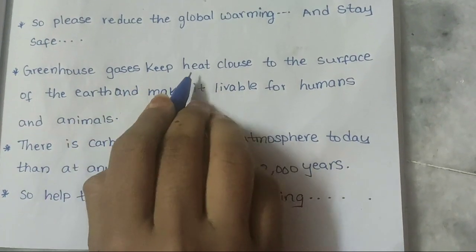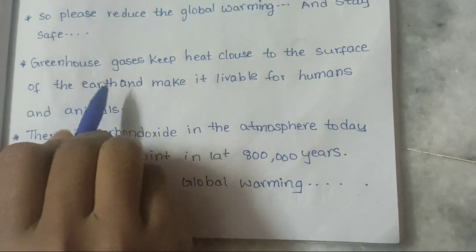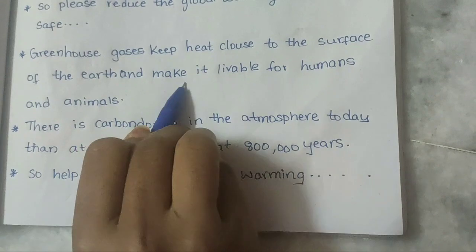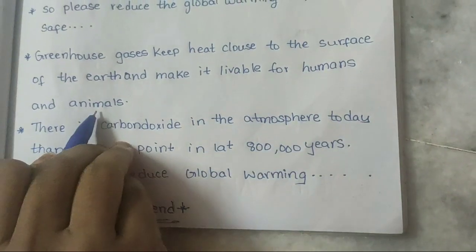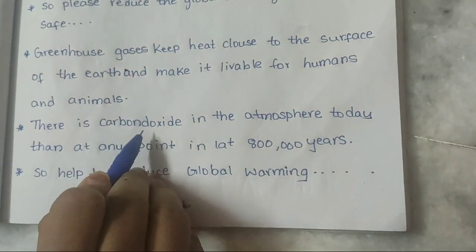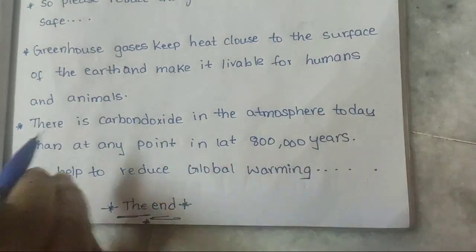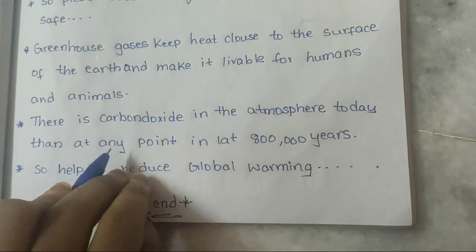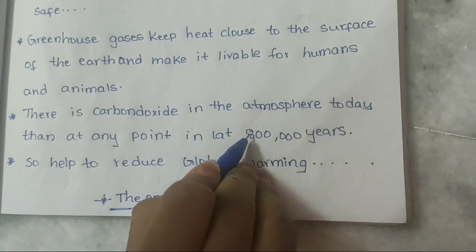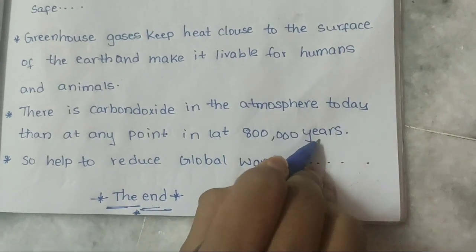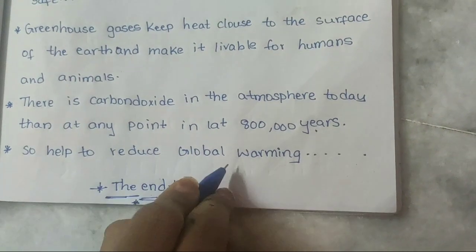Greenhouse gases keep heat close to the surface of the Earth and make it livable for humans and animals. There is more carbon dioxide in the atmosphere today than at any point in the last 8,000 years. So please help to reduce global warming.